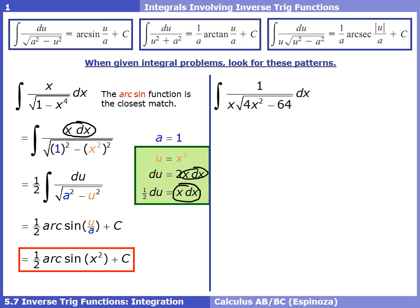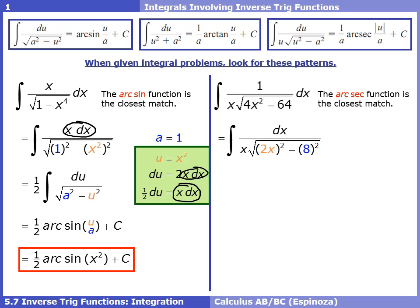This next problem is not simplifiable and there's no u-substitution we can do. Because it looks a lot like arcsecant, we're going to attempt to make it look like the arcsecant formula. We want to have u squared minus a squared under that square root. We can rewrite 4x squared as 2x quantity squared, and rewrite 64 as 8 squared. However, looking at the formula, we need a u times the square root of u squared minus a squared, meaning we need a 2x in front of that square root.